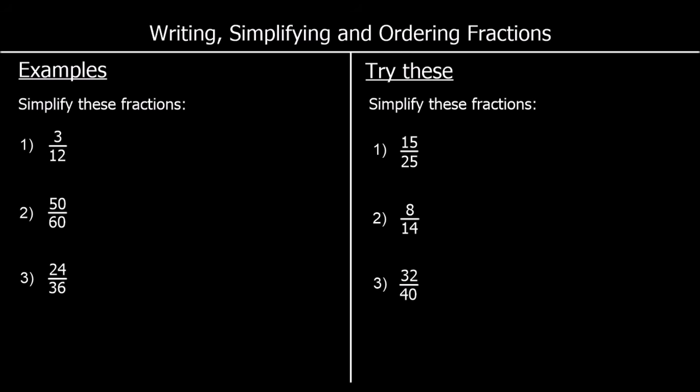Here we're being asked to simplify fractions. To simplify a fraction, we're looking to get the smallest possible number on the top and the bottom of the fraction. To do that, we look at what times table the top and the bottom number are both in. For the first one, we've got three twelfths. They are both in the three times table. So three is one times three — I'll write a one. And twelve is four times three. So one over four. One over four is equivalent to three twelfths. If you multiply top and bottom of one quarter by three, you would get back to three twelfths.